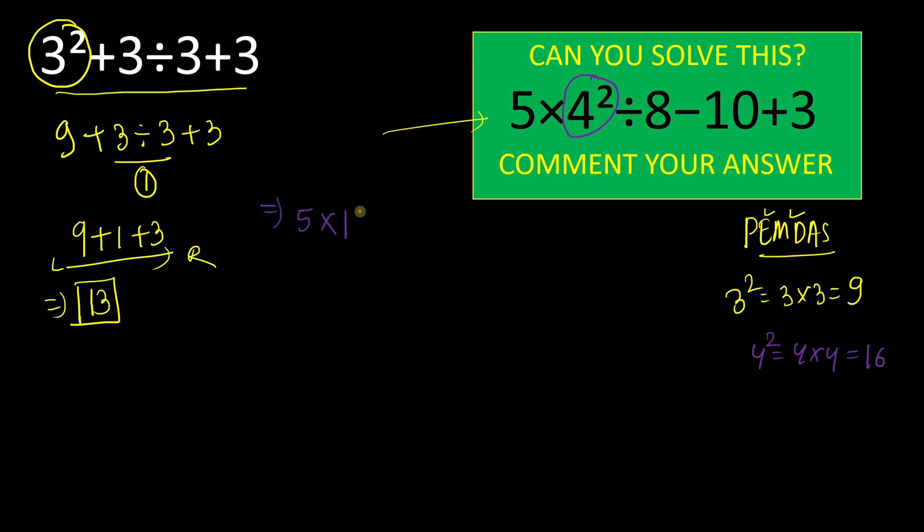Here, as you know, multiplication and division have higher priority than addition and subtraction, and also both have the same priority. So we will do left to right here. According to that, first we have to solve this multiplication, 5 × 16, which will give result 80 here.